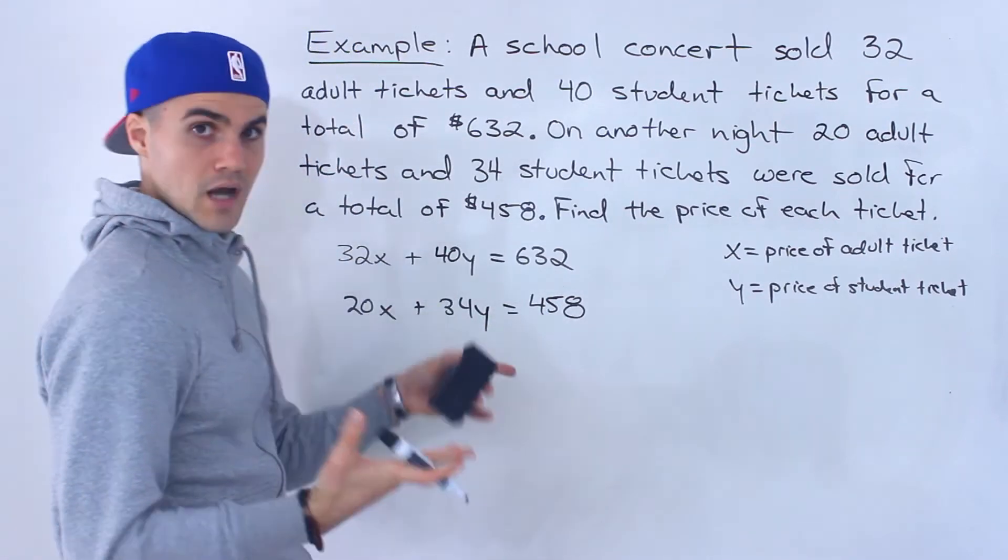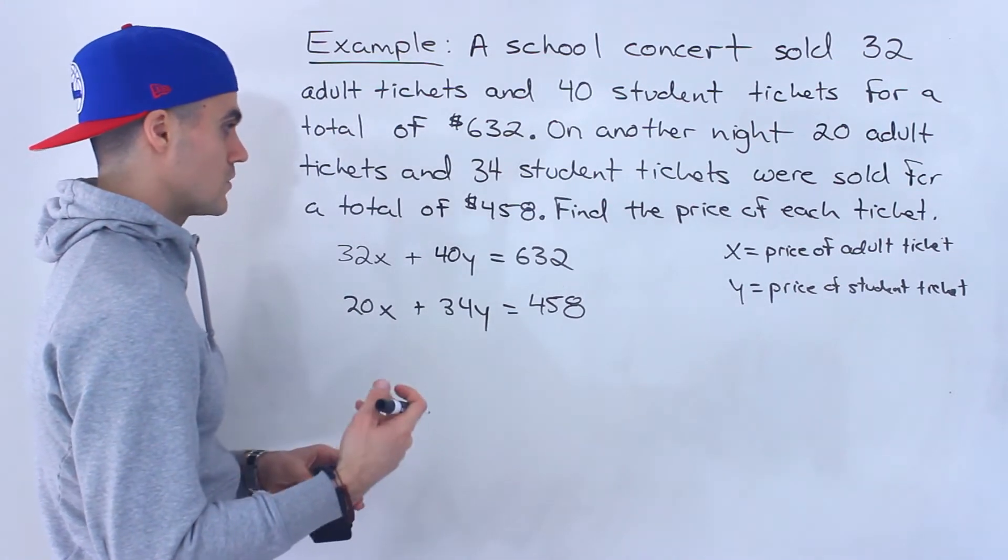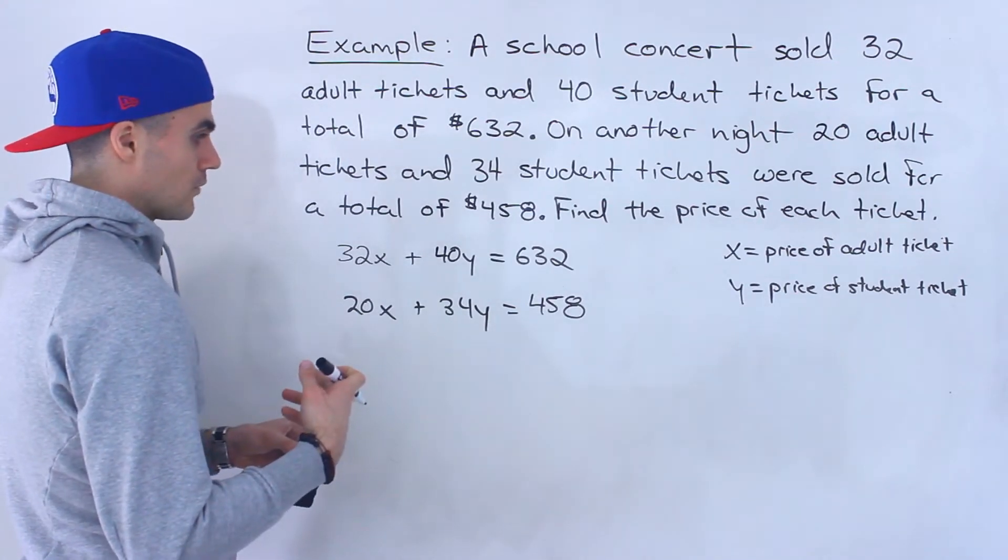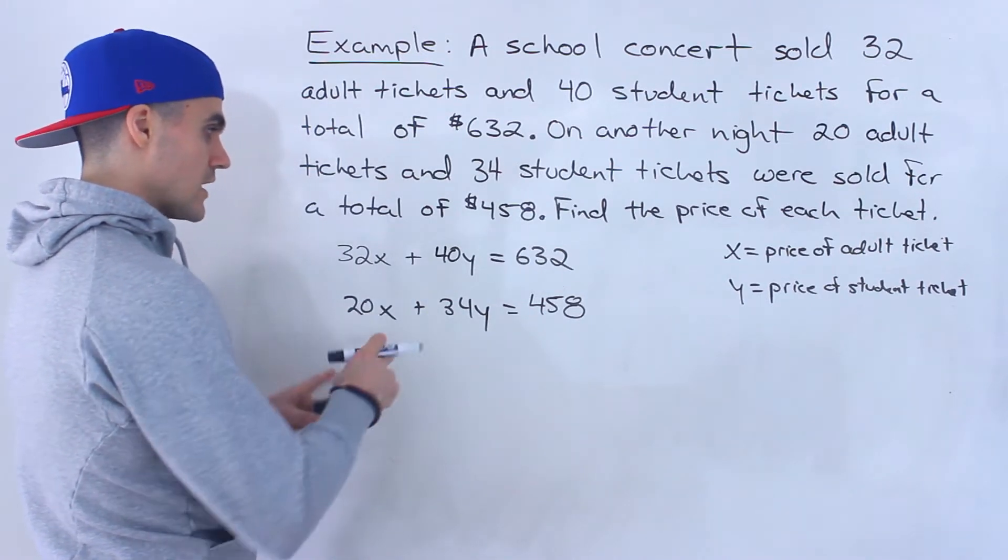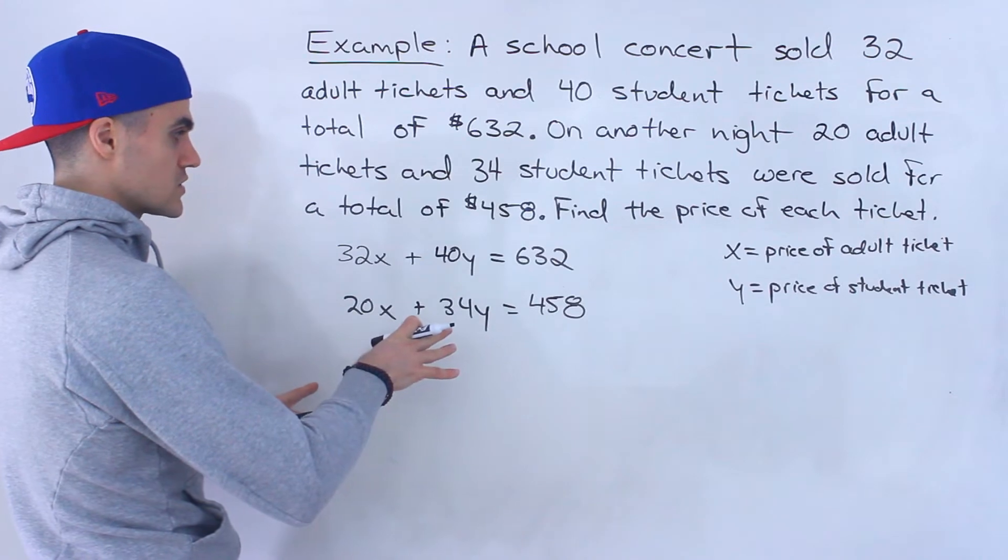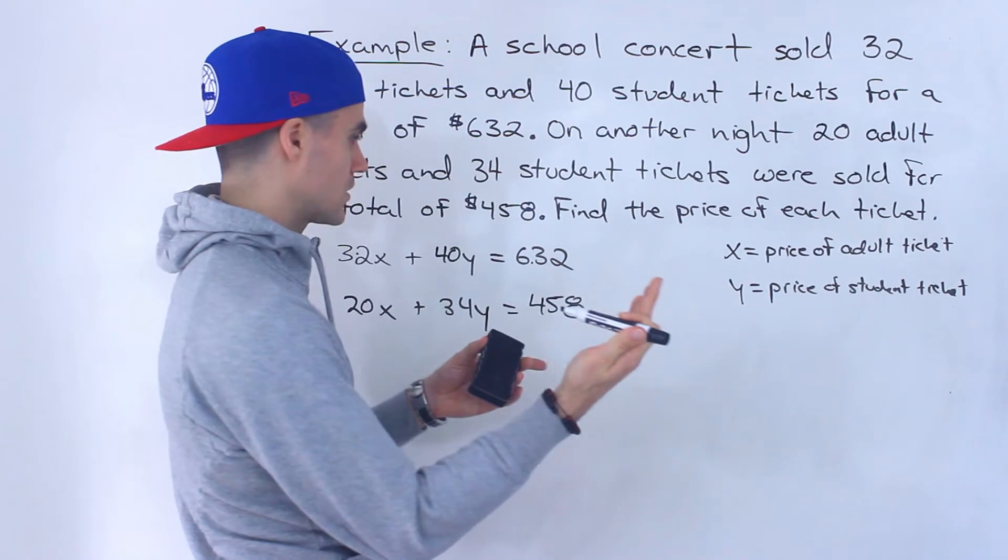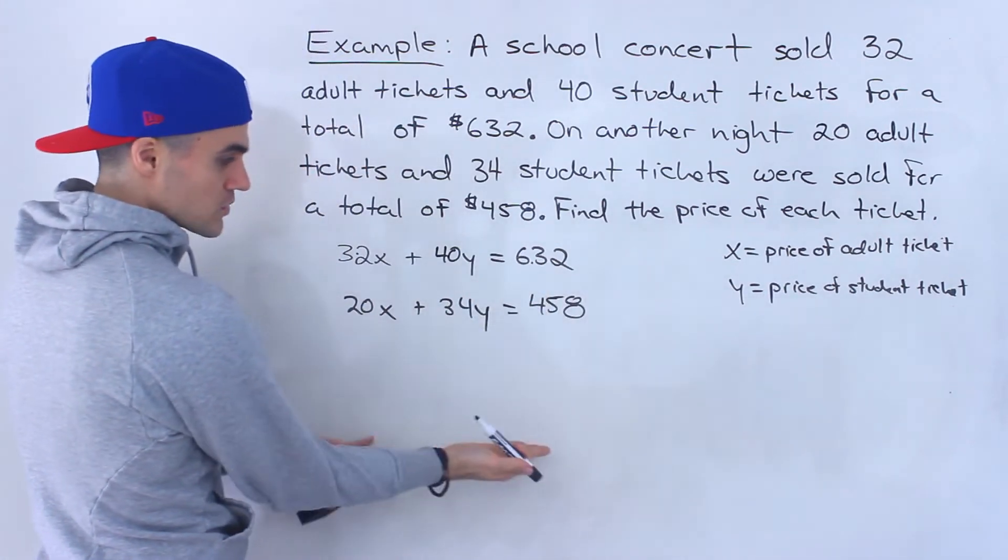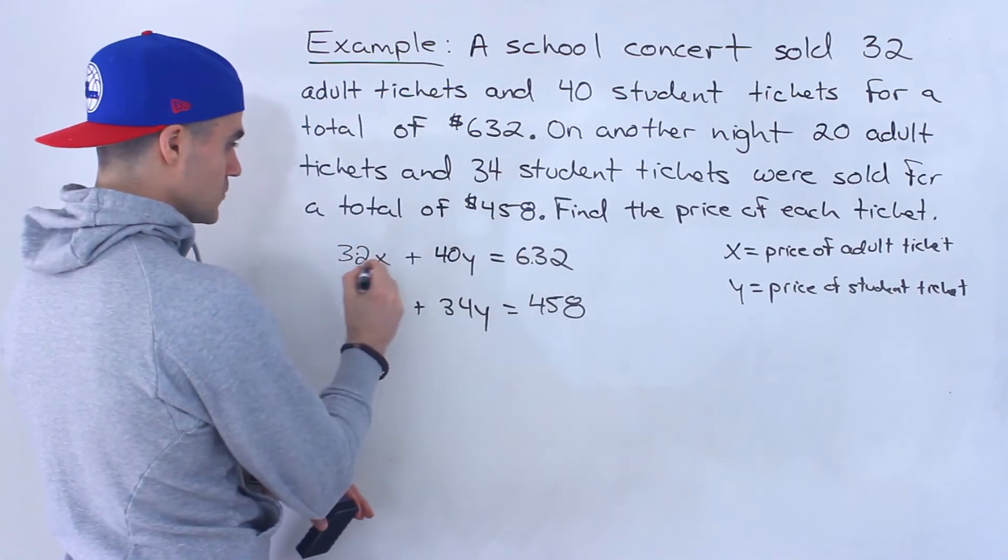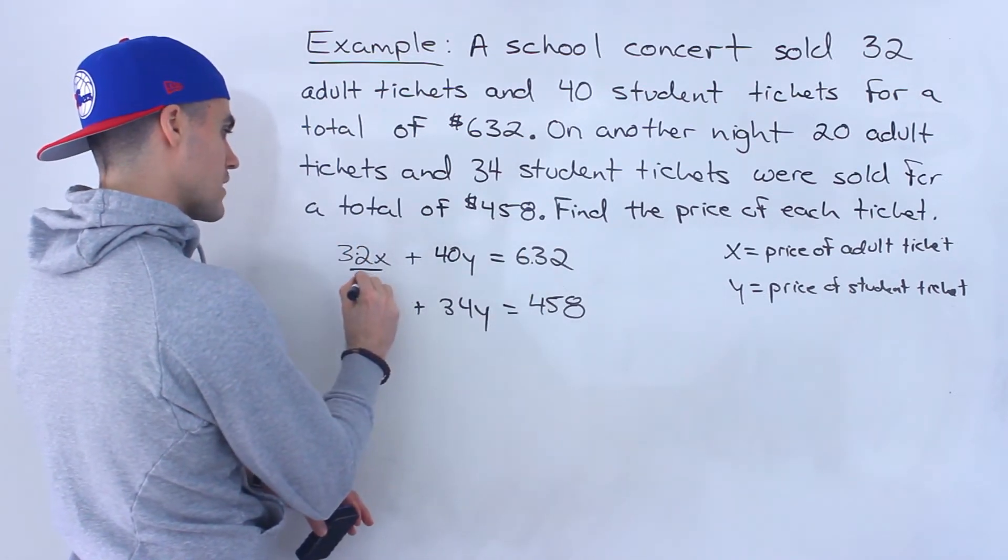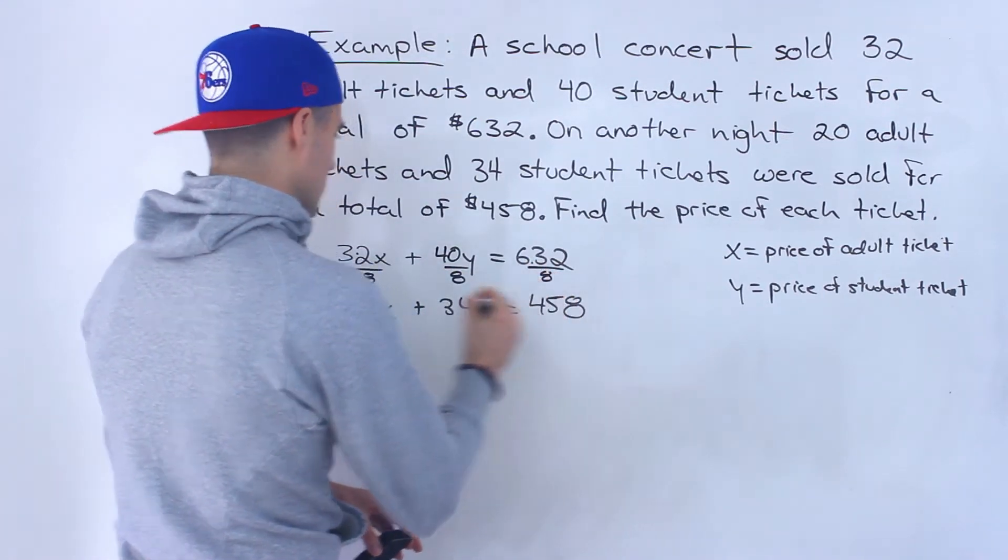Now notice we got two equations, two unknowns, and we got to solve for X and Y. So a couple of different ways we can go about this, substitution or elimination. What I'm actually going to do first is try to simplify these equations. The way you could do that is if you could divide everything by the same number, then that corresponding equation is going to be the same as the original one. So notice that with this first equation, we can actually divide everything by 8.